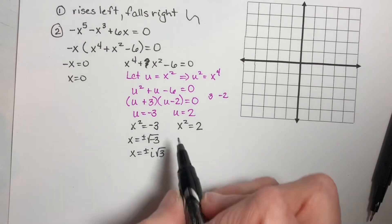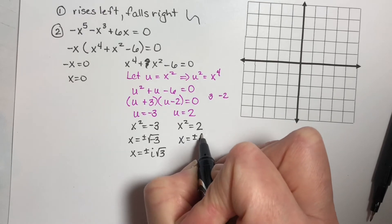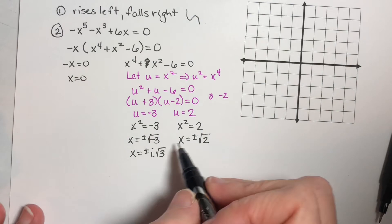But right here, if we take the square root of both sides, we get x is equal to plus or minus the square root of two. So we do have two x-intercepts right here.